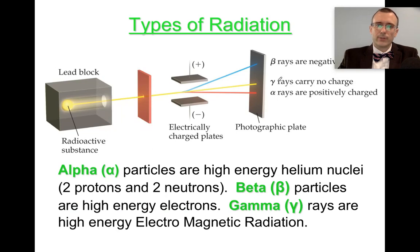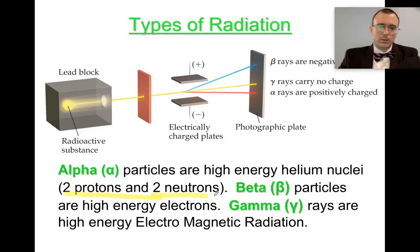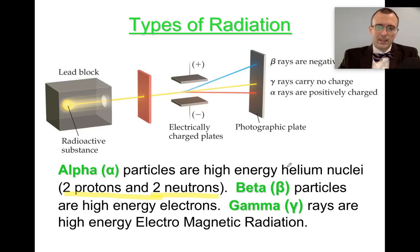He gave them names: alpha, beta, and gamma. Alpha particles were the ones that were positively charged and beta were the ones that were negatively charged. They eventually found out that alpha particles are composed of two protons and two neutrons. The protons give it the positive charge and neutrons give it some more mass. Alpha particles are essentially the same as ordinary helium nuclei — two protons and two neutrons, no electrons, with a plus-two charge.